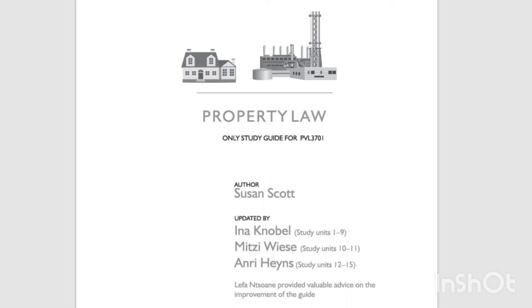2.3 Law, Right, Real Relationships, Real Rights and Entitlements. 2.3.1 Law and Right. We define the law as that body of rules and norms which regulates and harmonizes society, by demarcating the rights and duties of legal subjects. One must furthermore distinguish between the law and a right.